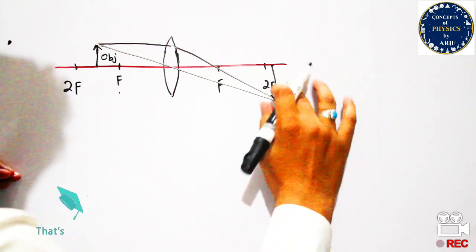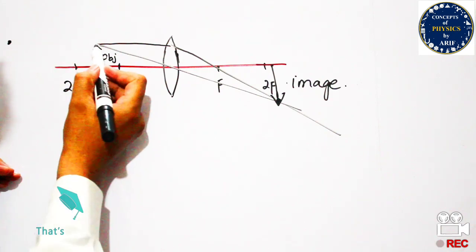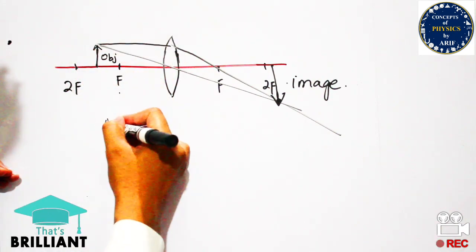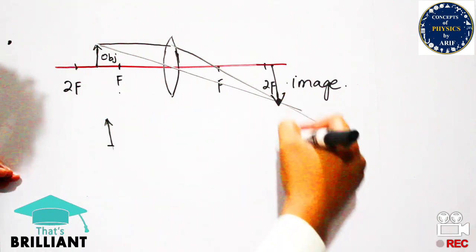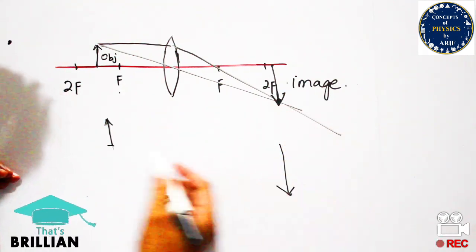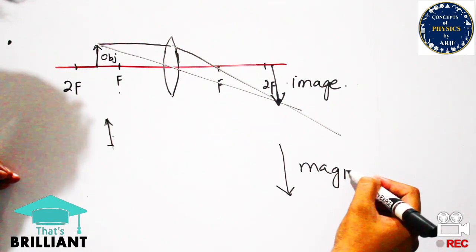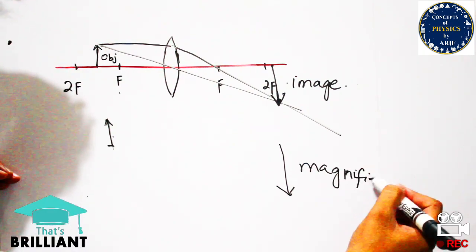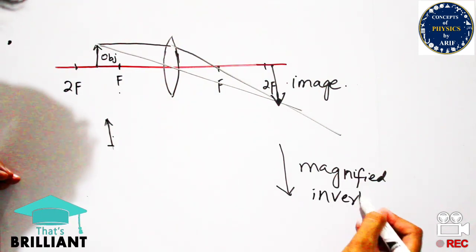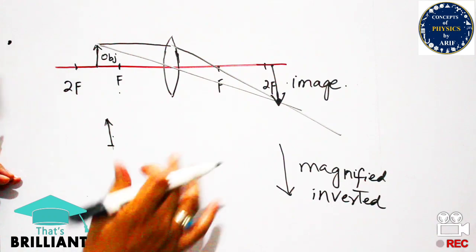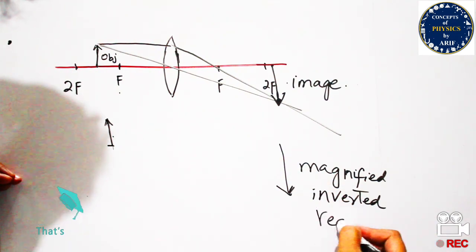The image is formed after 2f, because when the object is placed between f and 2f, the image will be formed beyond 2f. As you can see, the image is not erect — it is inverted. The size of the object is very small but the size of the image is very large.